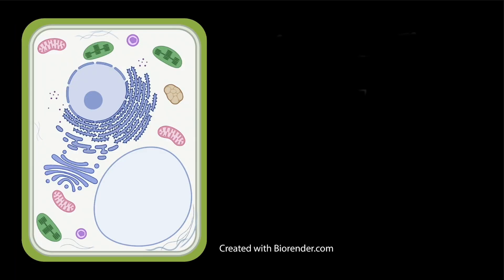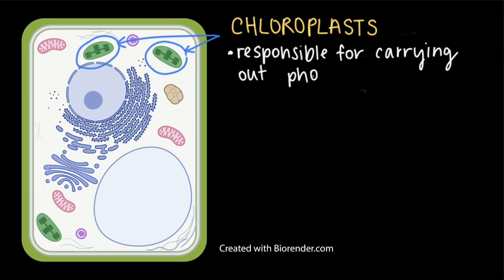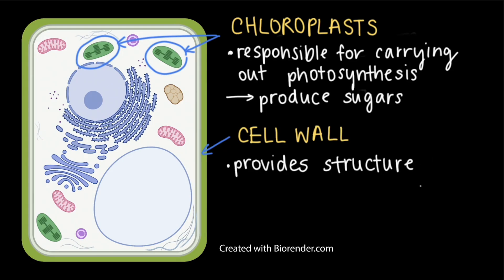Moving over to a plant cell, we can see these green organelles called chloroplasts. You might remember that plants carry out photosynthesis — chloroplasts are the organelles responsible for this process. Plants need food to live just like animals do, and chloroplasts use photosynthesis to produce sugars that plant cells use as food. Plant cells also have a layer outside their cell membrane called the cell wall, which helps provide structure for the cell.